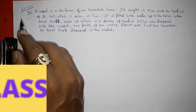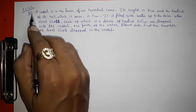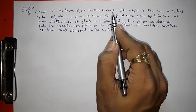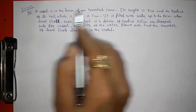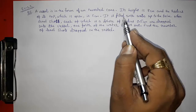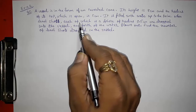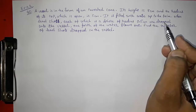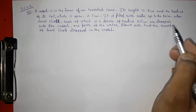Hello friends, today we are going to solve CBSE Class 10 Exercise 13.2, Question Number 5. A vessel is in the form of an inverted cone. Its height is 8 centimeters and the radius of its top, which is open, is 5 centimeters. It is filled with water up to the brim. When lead shots, each of which is a sphere of radius 0.5 centimeters, are dropped into the vessel, one-fourth of the water flows out.